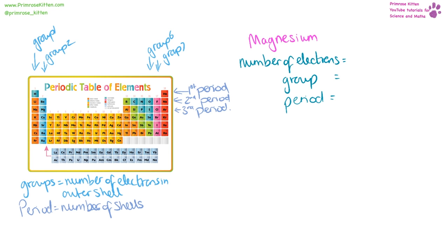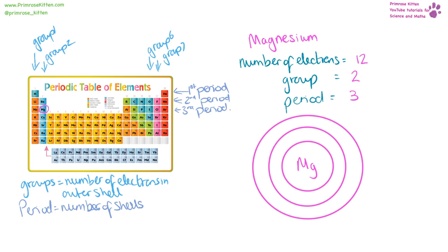We can use this information to tell us about the electronic configuration. Here we have magnesium on the periodic table. It has 12 electrons, it is in group two, and it is in period three. So it has 12 electrons in total, two electrons on the outer shell because it's in group two, and three shells because it is in period three. To draw the electronic configuration of magnesium: draw three shells. Two electrons go on the first shell, then eight on the second shell — that brings us to 10 — then 11, 12: two electrons on the outer shell.